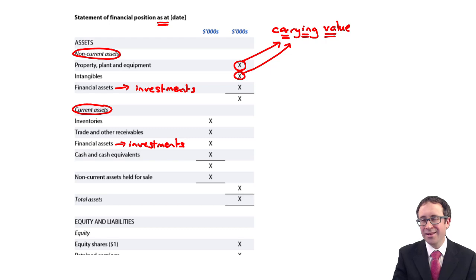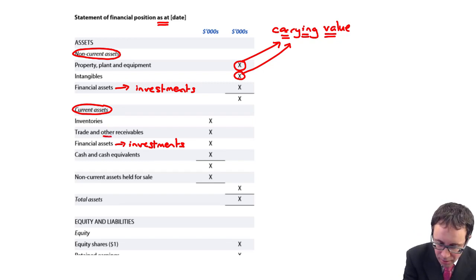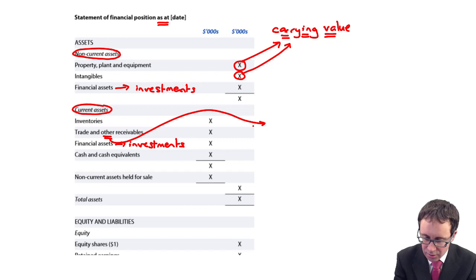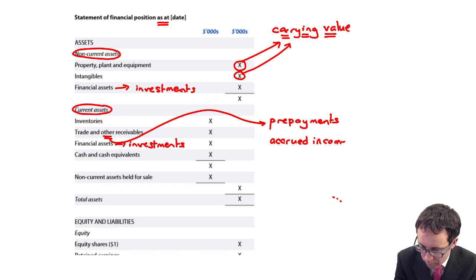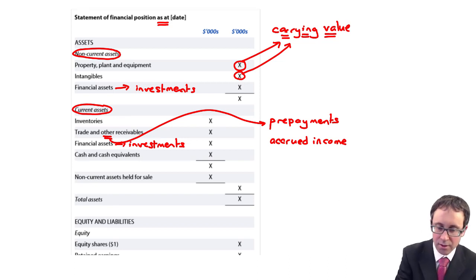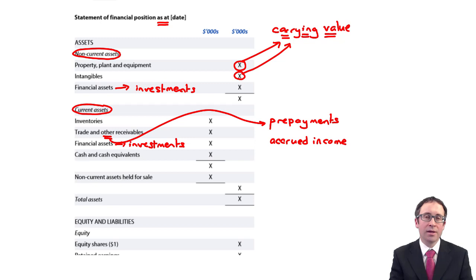But when we're looking there at investments, we're looking at it much more in the short term. So maybe you've gone through there and invested in some shares. So you've bought the equity of another entity, and you've just done that to go through there and make some short-term gains. So that will go there within your current assets. There isn't anything that you've got then that is different to what you've seen. You've got your cash and cash equivalents. Trade and other receivables. So I think there when you're thinking about your other receivables, things that will go in there would be your prepayments and also as well any accrued income.